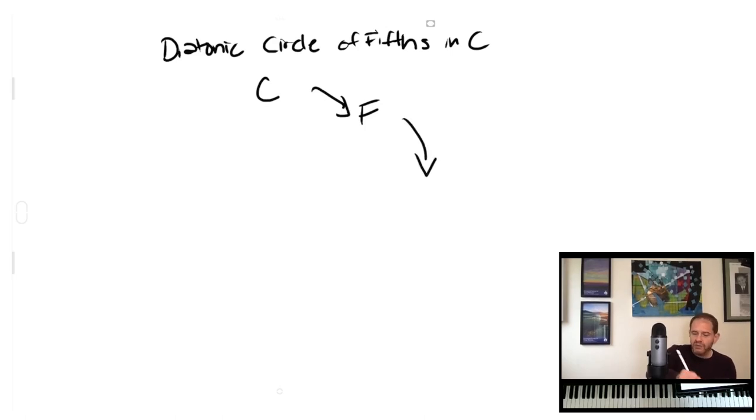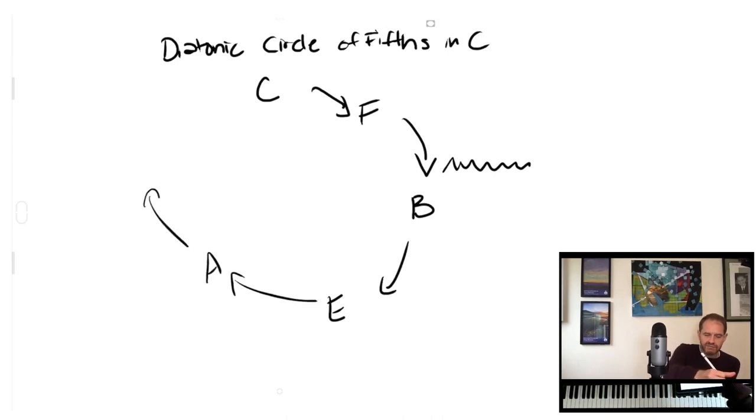So there's just one circle of fifths, but there's a diatonic circle of fifths for every key. We'll start in C, the people's key. In case you're not too familiar with the word diatonic or you need a review, diatonic means that we're not going to go outside of the scale. We're not going to add any extra flats or sharps to the key signature.